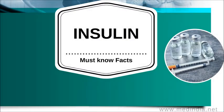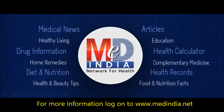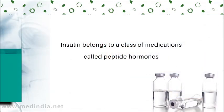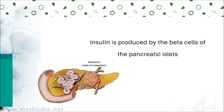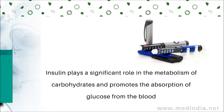Must know facts about insulin. Insulin belongs to a class of medications called peptide hormones. It is produced by the beta cells of the pancreatic islet. Insulin plays a significant role in the metabolism of carbohydrates and promotes the absorption of glucose from the blood.